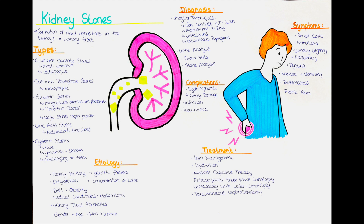If the stone is small, asymptomatic and has a high likelihood of spontaneous passage, the doctor may recommend increased fluid intake to promote natural stone expulsion. Regular monitoring and follow-up with imaging or urine analysis may be required to assess stone movement and patient symptoms. Medications may be prescribed to make stone passage easier. Alpha-blockers such as tamsulosin can relax the muscles in the urinary tract, helping in the passage of stones. This therapy is more commonly used for stones less than 10 mm in size.